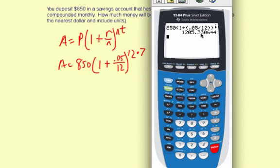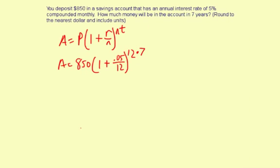It looks like $1,205.33. Rounded to the nearest dollar, it will be $1,205.